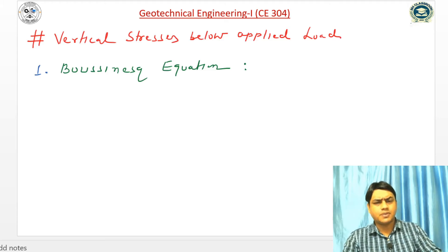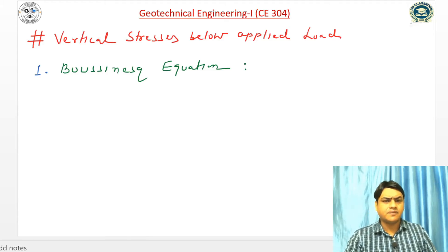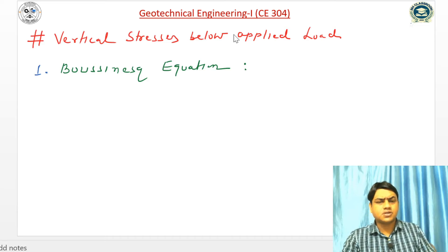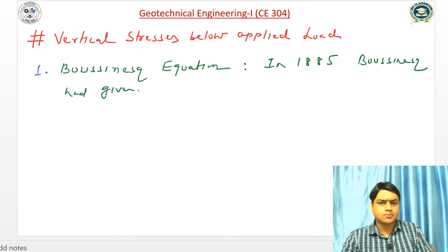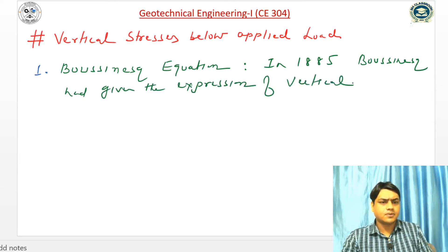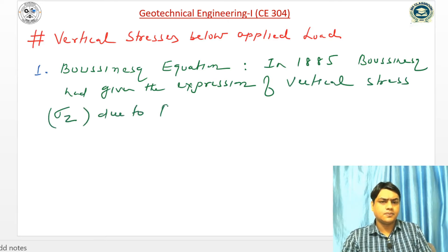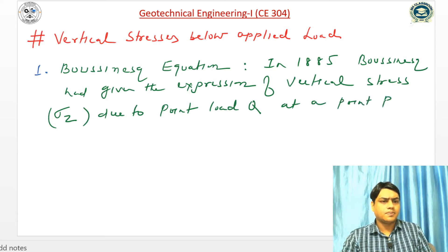Let us start with vertical stresses below the applied load. Vertical stresses in soil are either due to the self-weight of the soil or due to applied loads. Here I will discuss vertical stress due to applied loads. The first theory is the Boussinesq equation. Boussinesq in 1885 gave the expression of vertical stress σz due to a point load Q at a point P with coordinates r and z — meaning at a radial distance r and at a depth z.